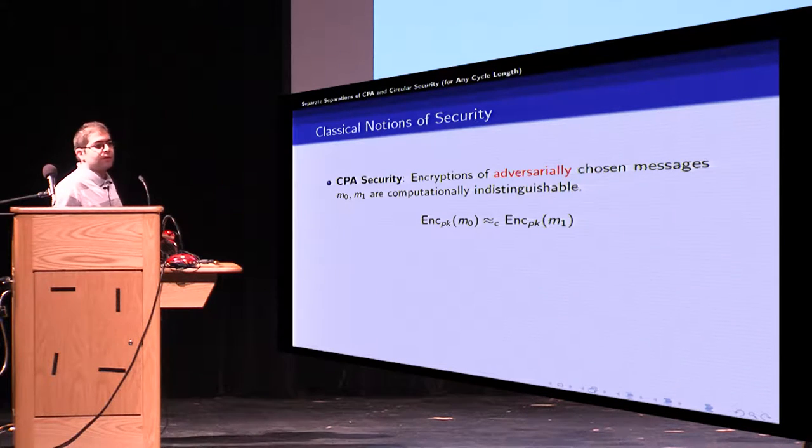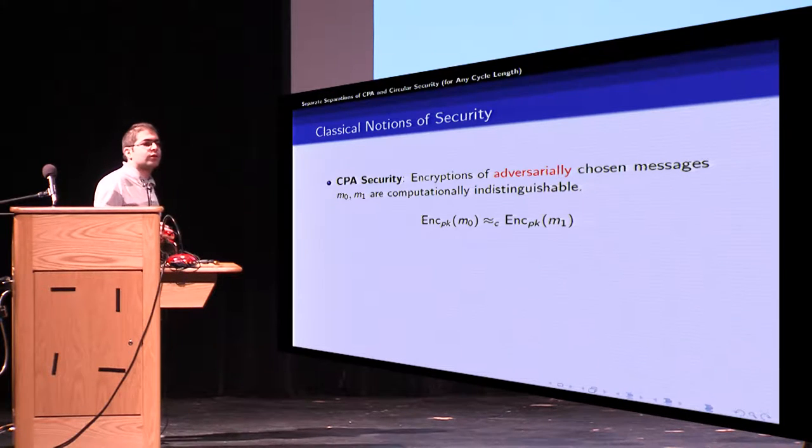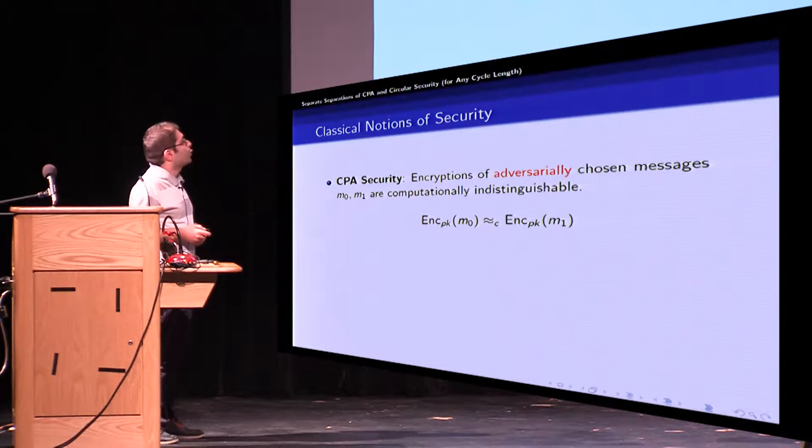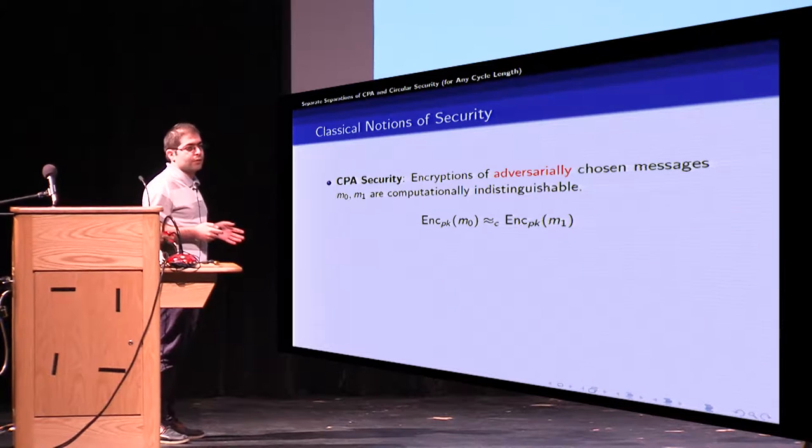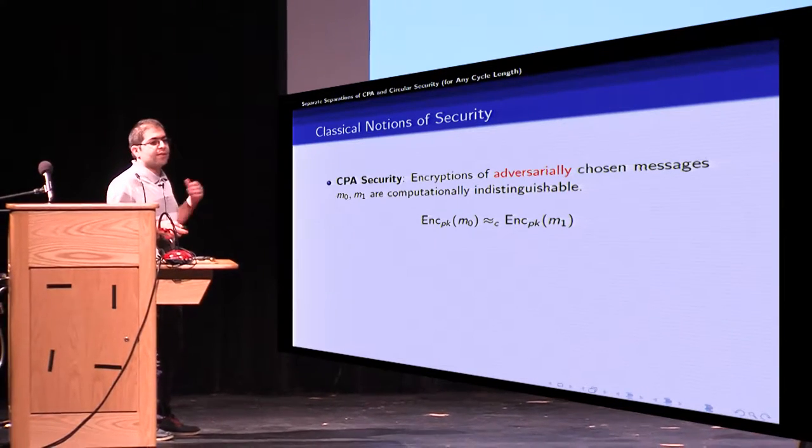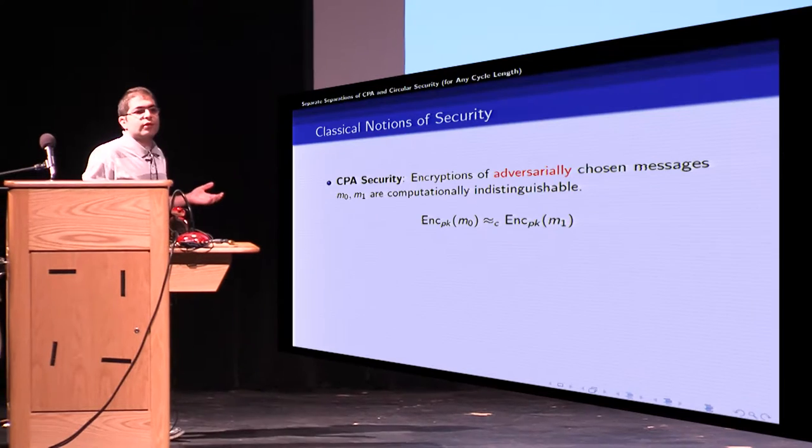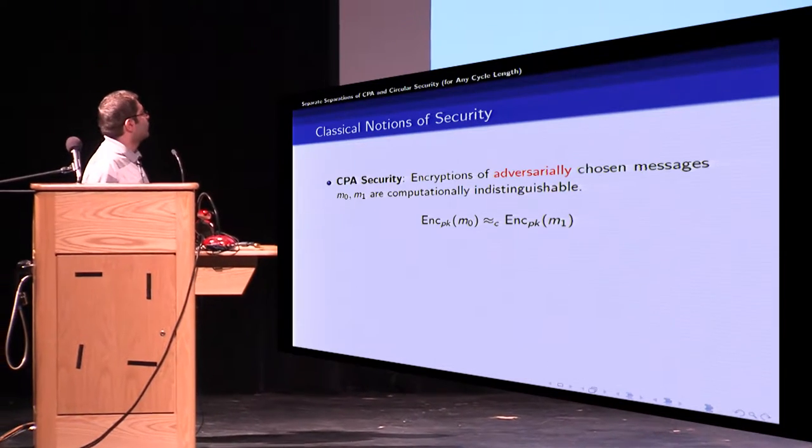Back to classical notions of security, we have two well-known definitions. One is CPA security which says that encryptions of adversarially chosen messages are computationally indistinguishable. The attacker submits two messages and receives the challenge ciphertext and has to determine which one is encrypted under the public key.